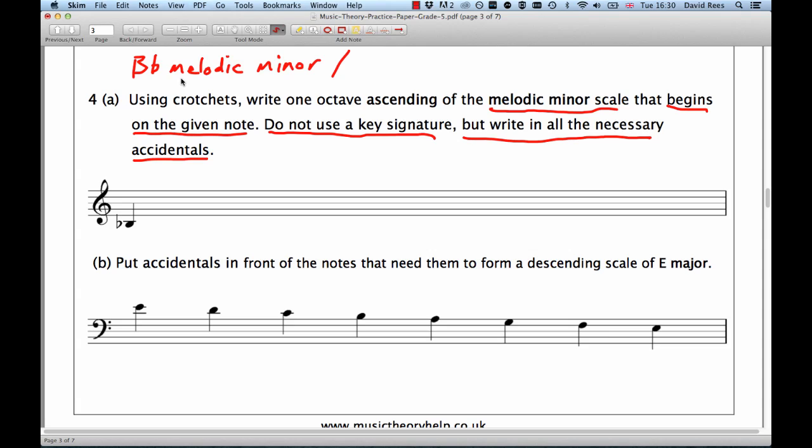up a semitone is B, that's 1, up another semitone is C, that's 2, up another semitone is D♭, and that is 3. So the relative major of B♭ minor is D♭ major.